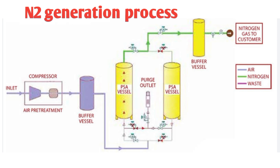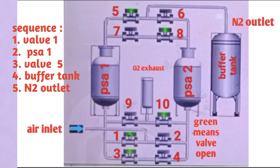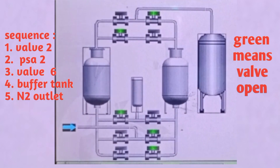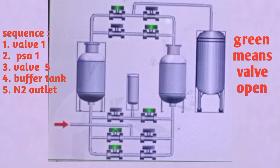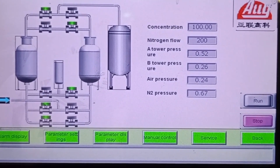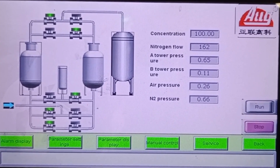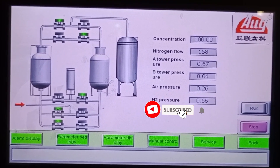For moisture-free air, a dryer unit is used. Also, for nitrogen purity observation, a nitrogen analyzer unit is used. This is an online system. For oxygen exhaust, here is a silencer unit. This process is a continuous process. This nitrogen is used as sealing gas.